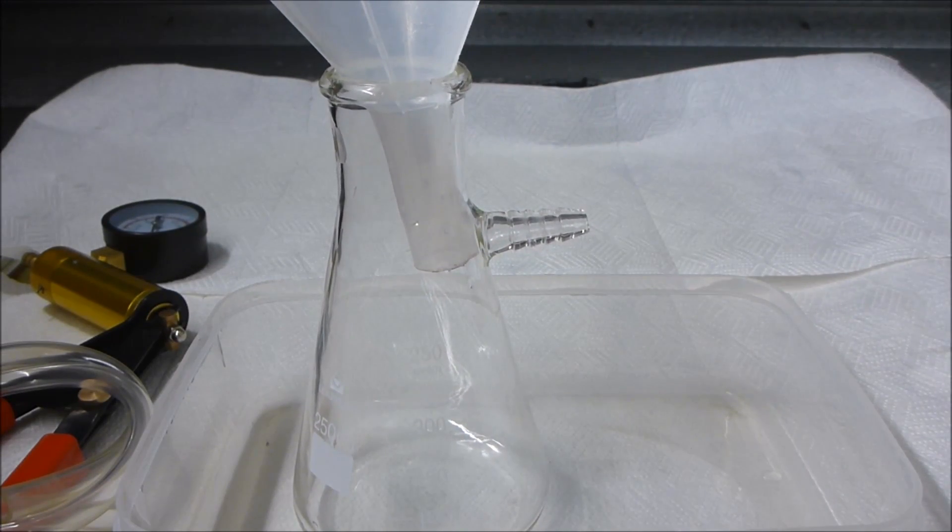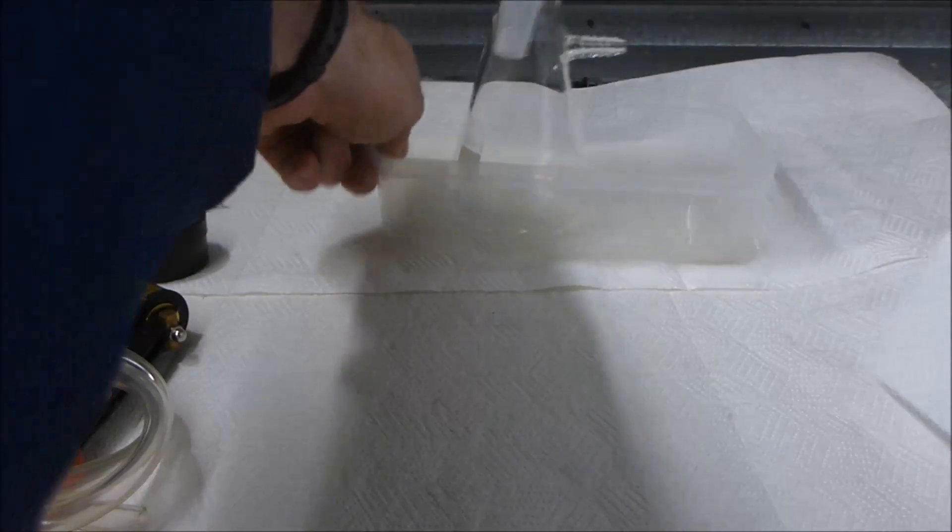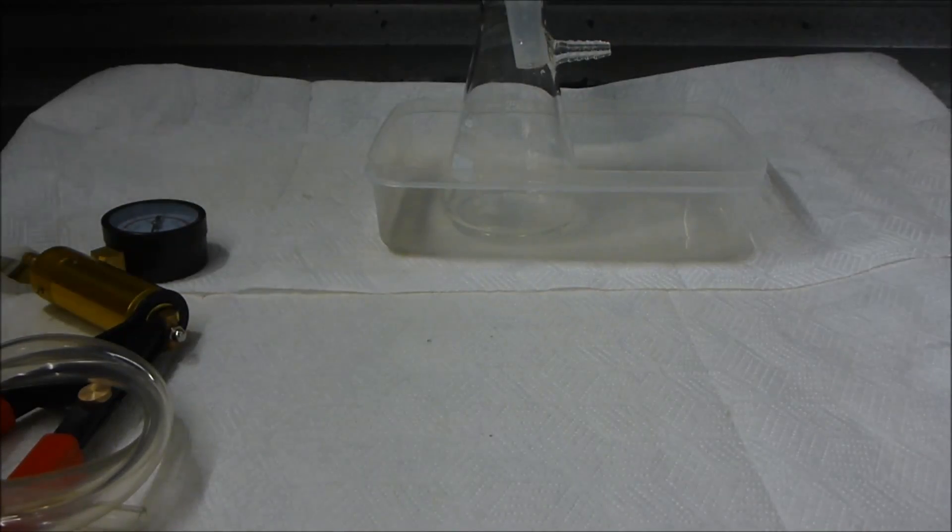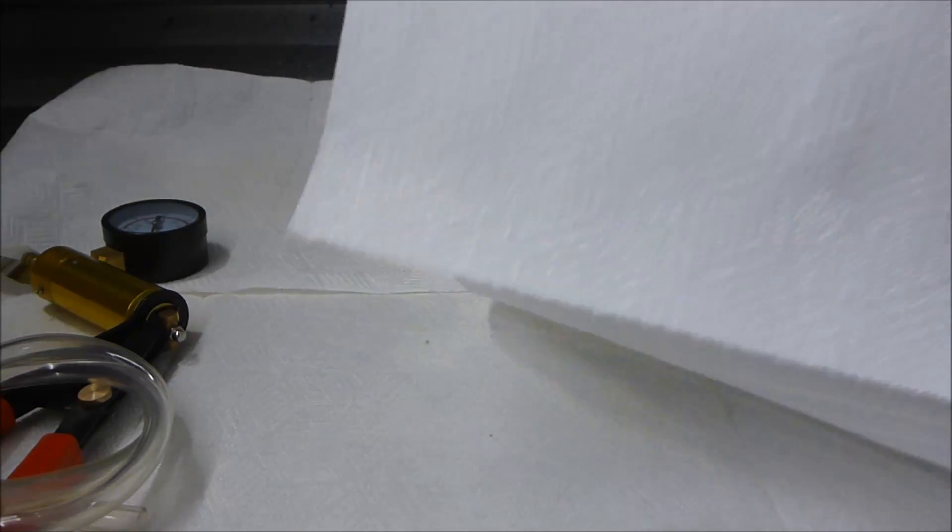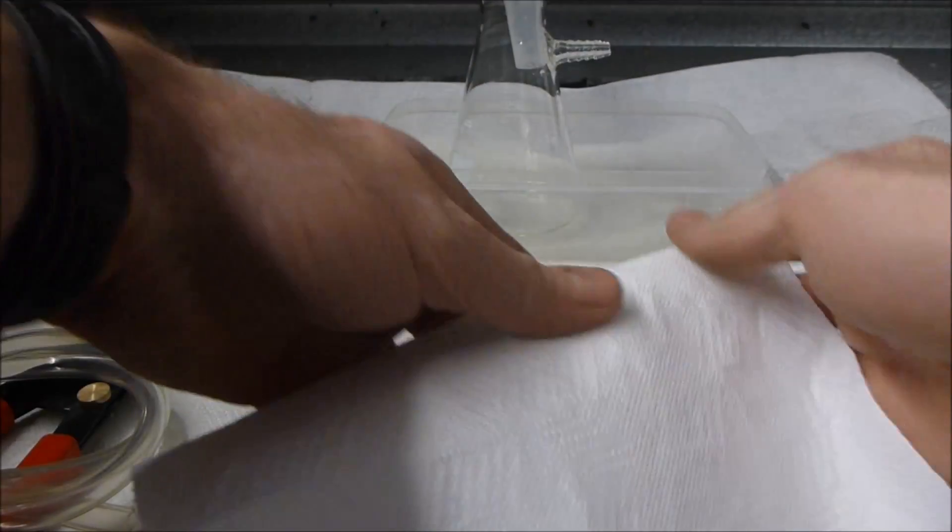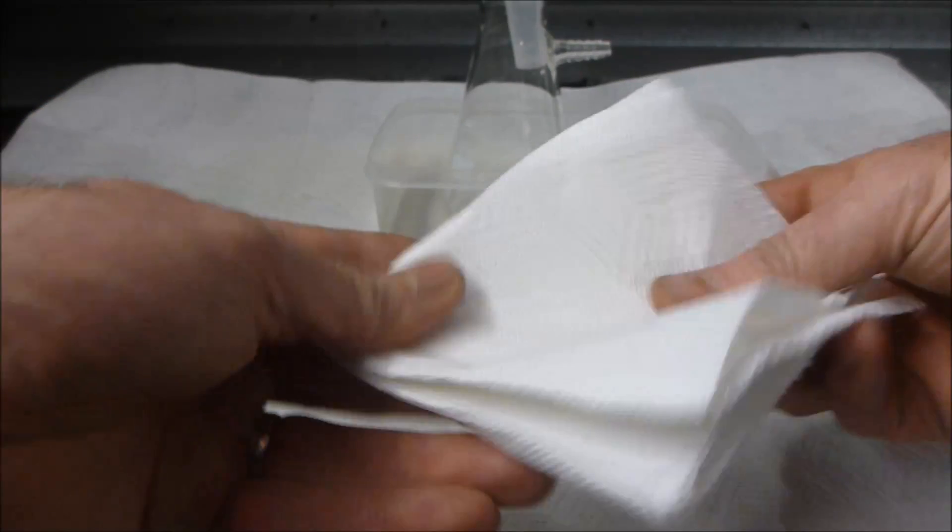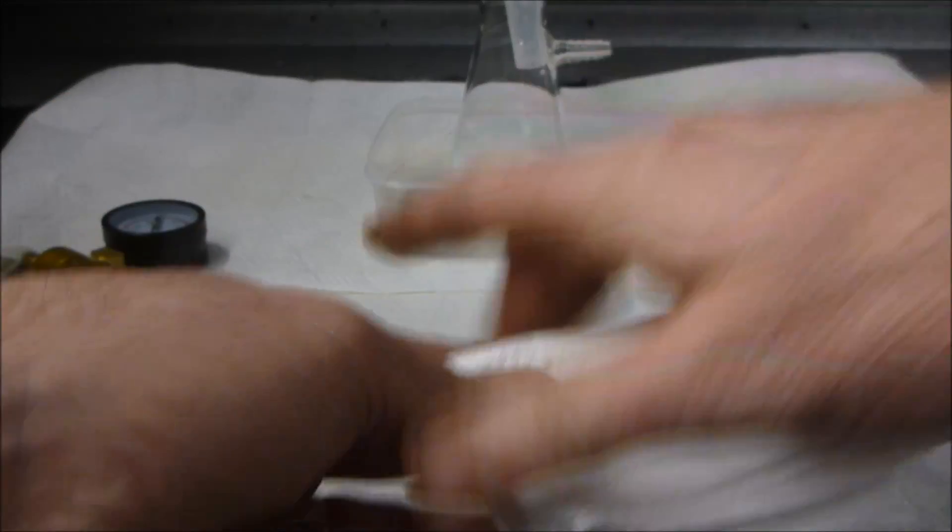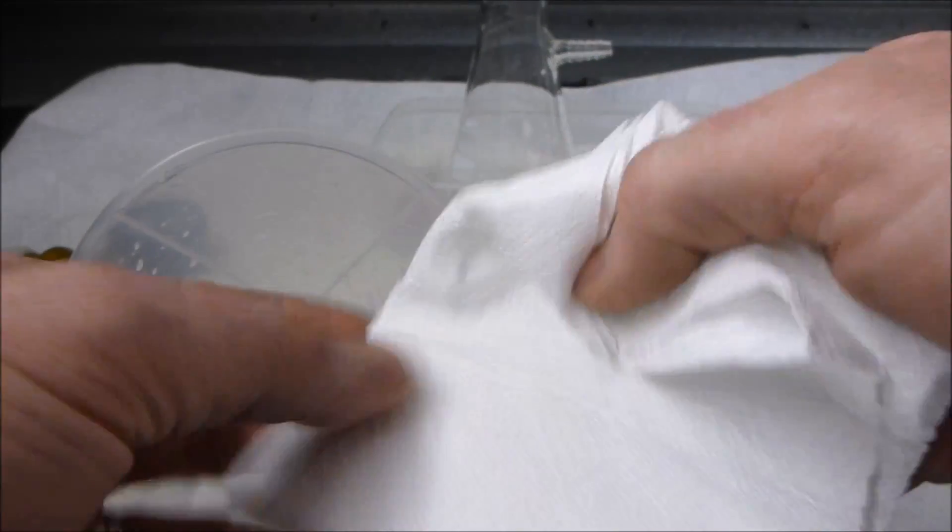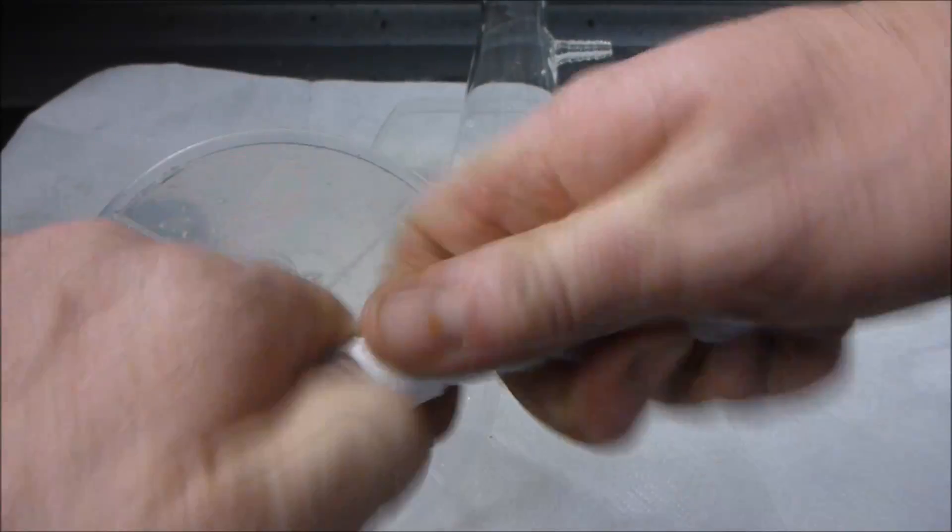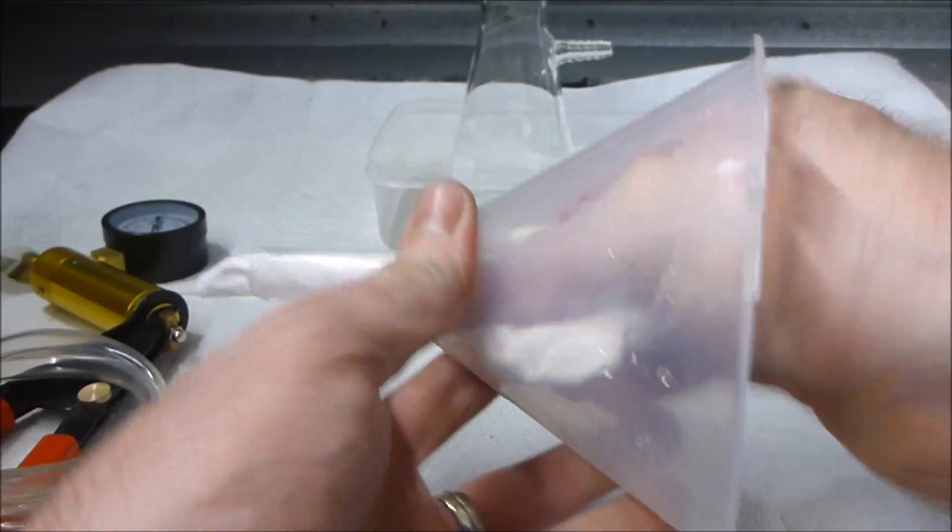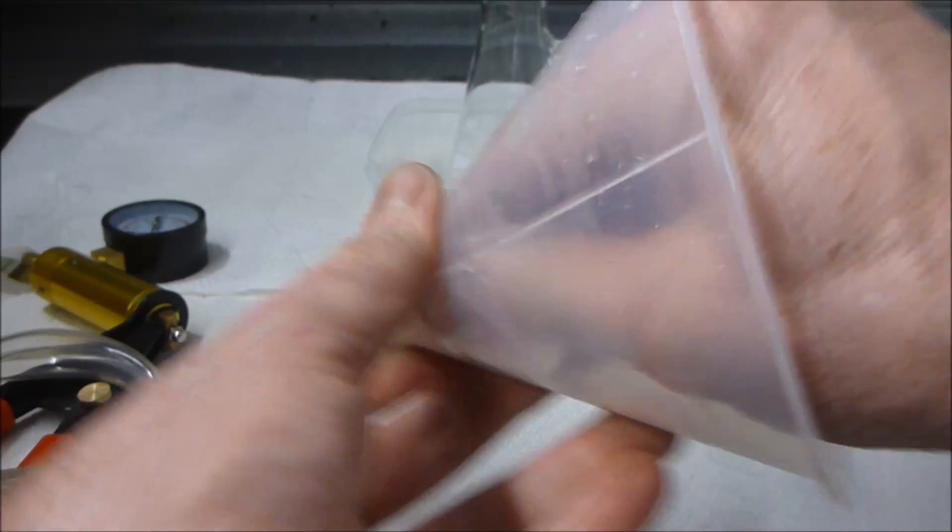For the plug today I'm going to use standard cheap supermarket non-scented plain white paper towels. I'm going to grab a couple of sheets and just start folding them over and over. The idea being that when we put that into the funnel we want it to be substantially difficult to get it through the funnel. Give it a twist like that.